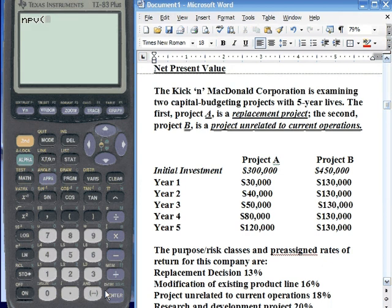Okay, so we have three interest rates we can choose from, but because we are doing the replacement project, we go with the replacement decision. So we're going with 13% to put in there first. And then we're going to put in the initial outlay of negative $300,000, which is my salary for this video.